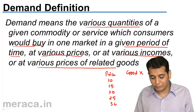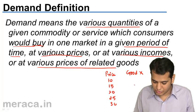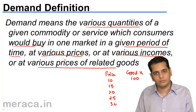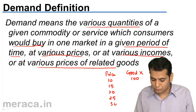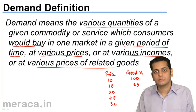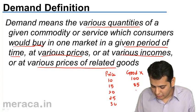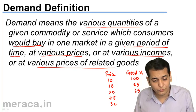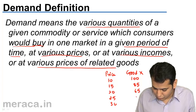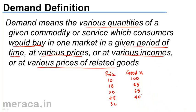When the price of this good is 10 rupees, I may purchase 100 units. But when the price increases to 15, I reduce my consumption to 85 units. When the price increases to 20, I reduce my consumption to 65 units. When the price increases further to 25 rupees, I decrease my consumption to 40 units, and finally when the price is 30, I may buy only 15 units. So I am demanding different quantities at different price levels.